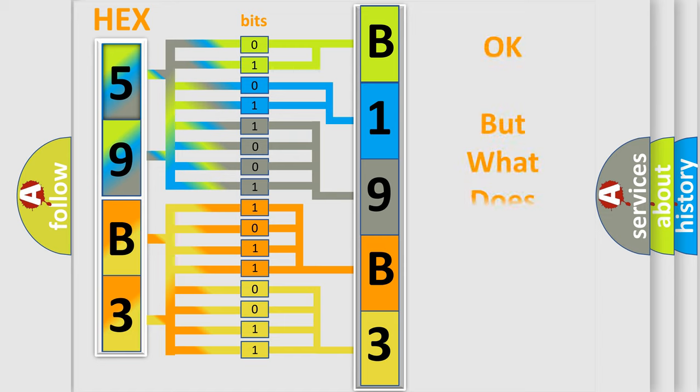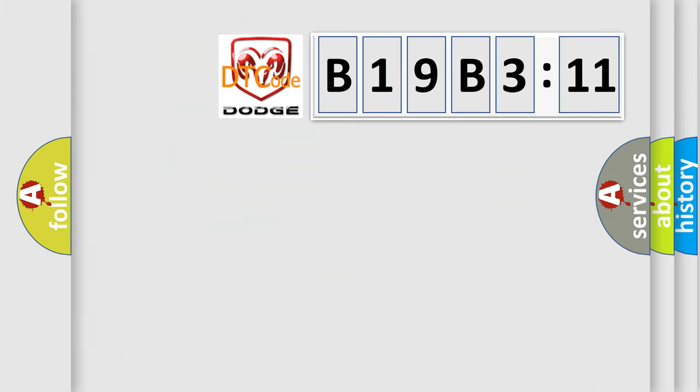We now know in what way the diagnostic tool translates the received information into a more comprehensible format. The number itself does not make sense to us if we cannot assign information about what it actually expresses. So, what does the diagnostic trouble code B19B311 interpret specifically for Dodge car manufacturers?